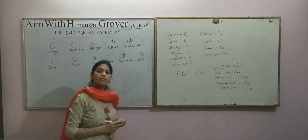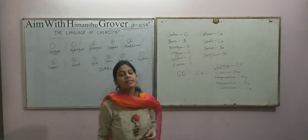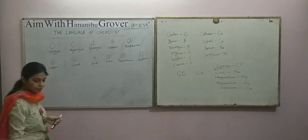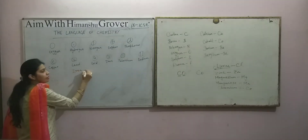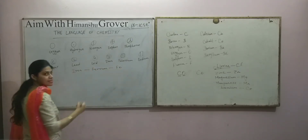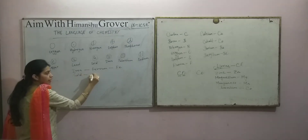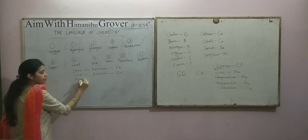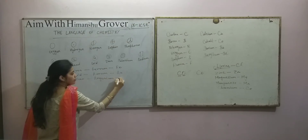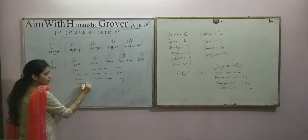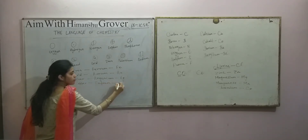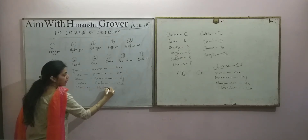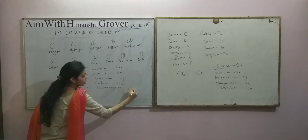Some elements are symbolized from their Latin names. For example, the Latin name of iron is ferrum, so the symbol of iron is Fe. The Latin name of gold is aurum, so the symbol is Au. Silver's Latin name is argentum, symbol Ag. Copper's Latin name is cuprum, symbol Cu. Mercury's Latin name is hydrargyrum, symbol Hg.